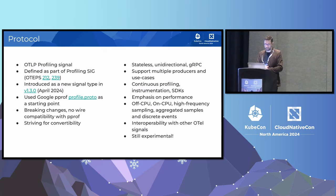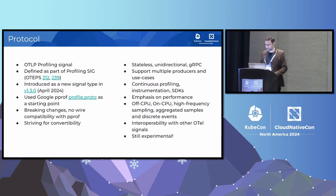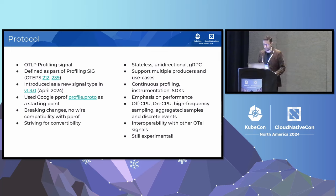The profiling agent reports collected data using the OTLP profiling signal — a new signal type introduced in April this year. We started with Google pprof as the base, but decided to break wire compatibility with pprof in favor of rapid evolution, striving instead for convertibility. This new profiling signal is stateless, unidirectional, and works on top of gRPC. We want first-class support for continuous profiling as well as instrumentation and SDKs, and interoperability with other OpenTelemetry signals is high priority. The signal is still experimental and undergoing breaking changes, but feedback is greatly appreciated — please get involved with the profiling SIG discussions. We hope to stabilize it sometime in the new year.